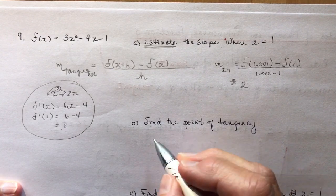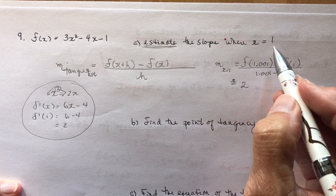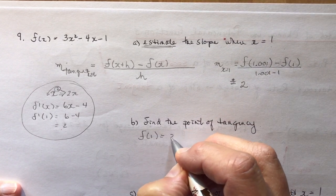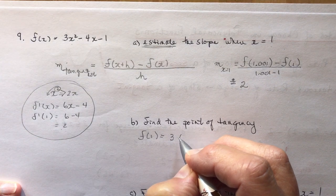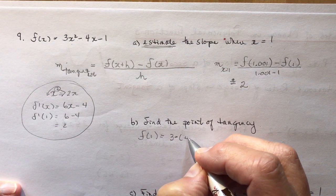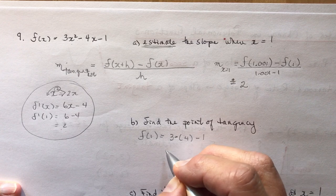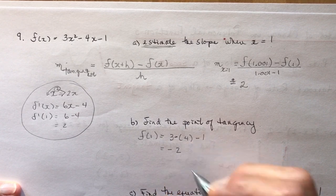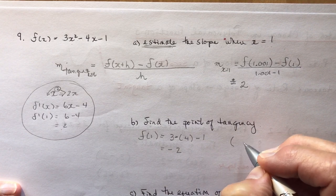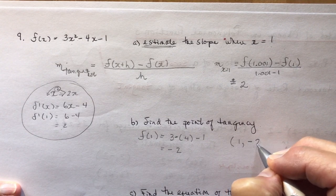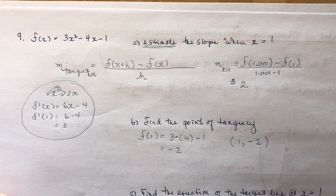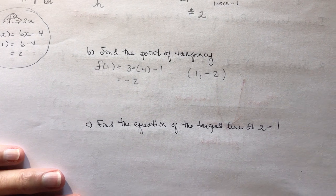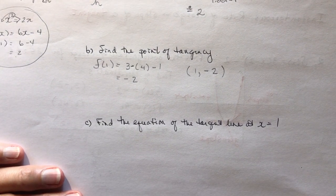So find the point of tangency. So I need to know what's the y value when x is 1. So f at 1 is equal to 3 minus 4 minus 1. So 3 minus 4 minus 1 is minus 2. So that means the coordinates are 1 and minus 2. So once I have the coordinates, the last part of the question says here to find the equation of the tangent at x equals 1.